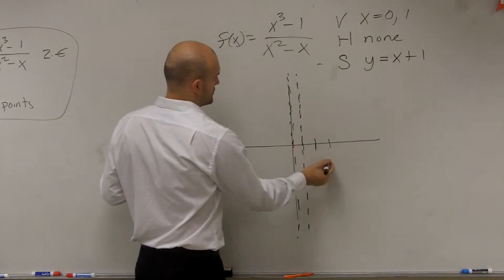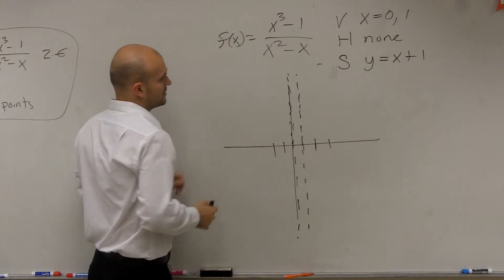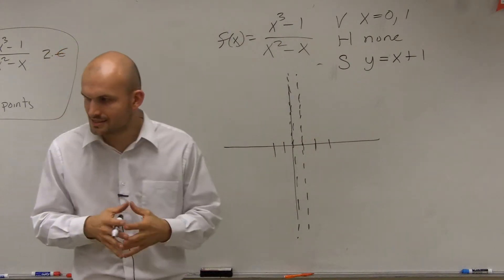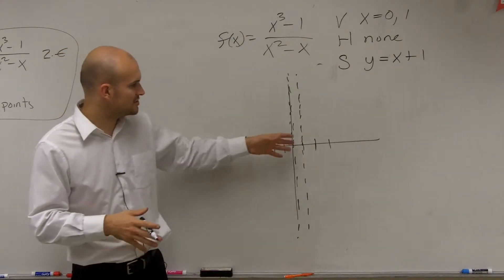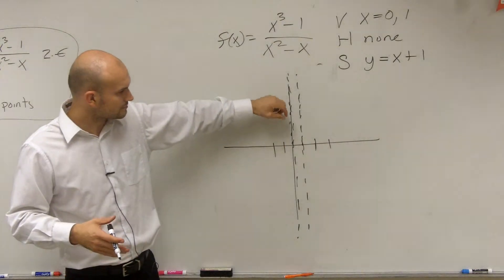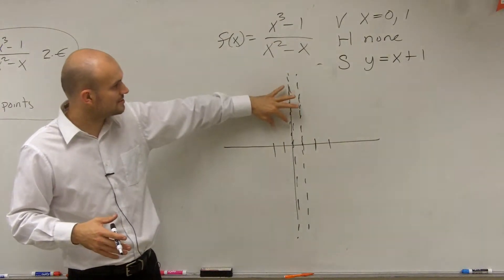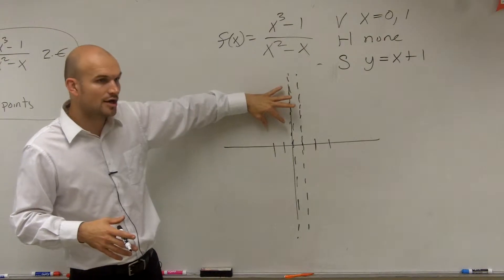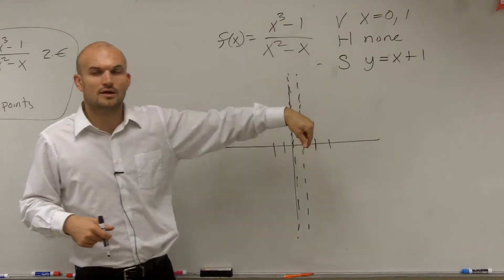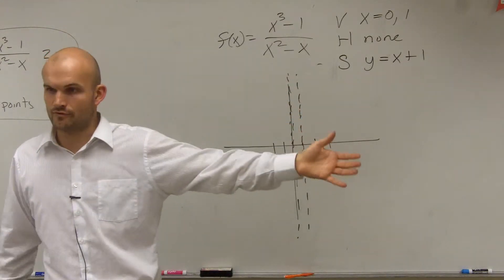And then we have 2, 3, negative 1, negative 2. So all I'm going to ask you guys to do is, I would like you guys to pick two solution points to the left of your vertical asymptotes, and two solution points to the right of your vertical asymptote.